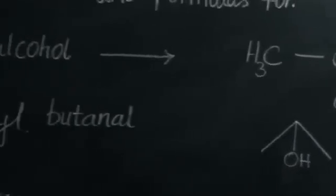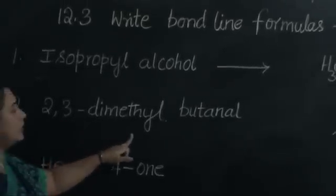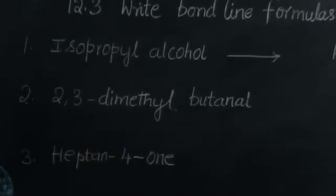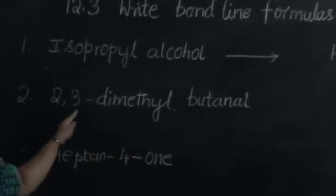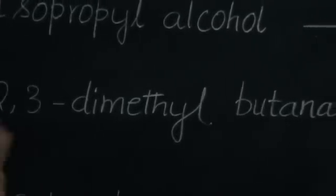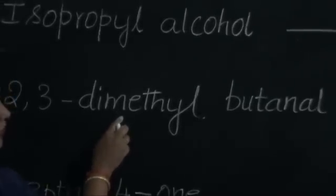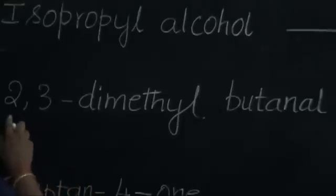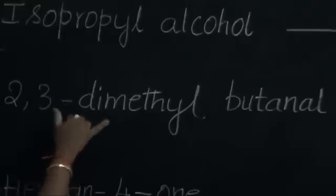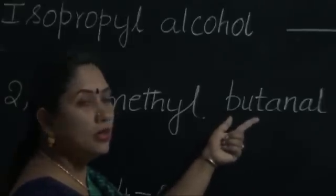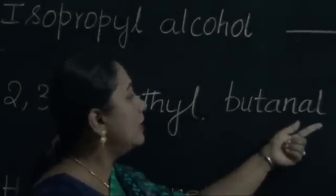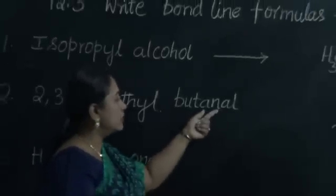The second structure is 2,3-dimethylbutanal. Focus your attention on the name of this organic compound. In the second and the third carbon atom positions, we find the presence of a methyl group. Because there are two methyl groups at the second and third carbon atom positions, the prefix 'di' has been used. 'But' is the root word, meaning this organic compound contains four carbon atoms, and it is a saturated one.